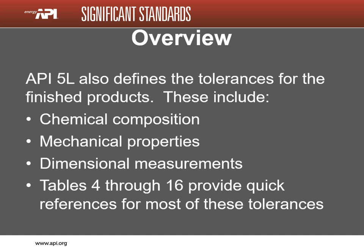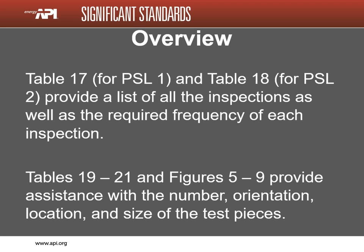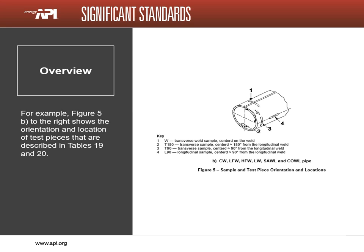Tables 4 through 16 provide quick references for most of these tolerances. Tables 17 for PSL-1 pipe and Table 18 for PSL-2 pipe provide a list of all the inspections as well as the required frequency of each inspection. Table 18 describes the frequency of 28 inspections. Tables 19 through 21 and figures 5 through 9 provide assistance with the number, orientation, location, and size of the test pieces. This figure is an example of the information provided — it shows the orientation and locations of test pieces for pipe with straight weld seams. There are similar figures for seamless and helical pipe.